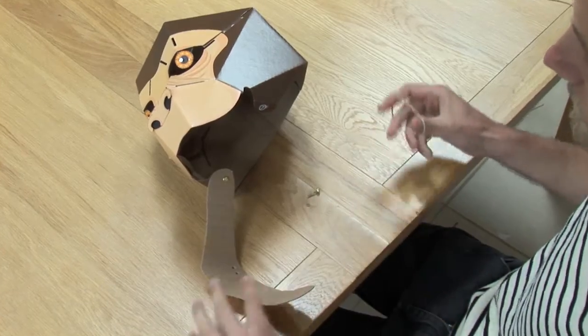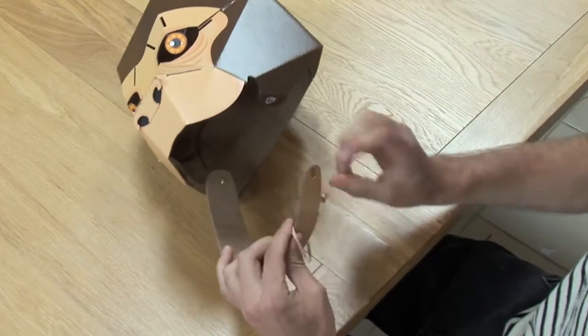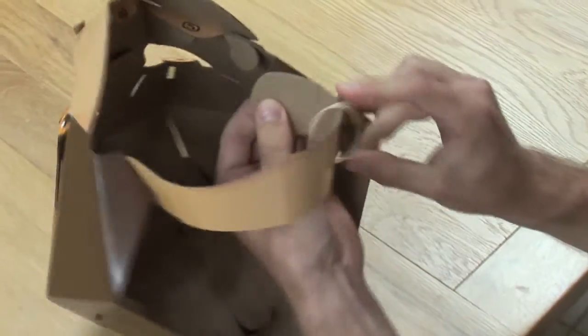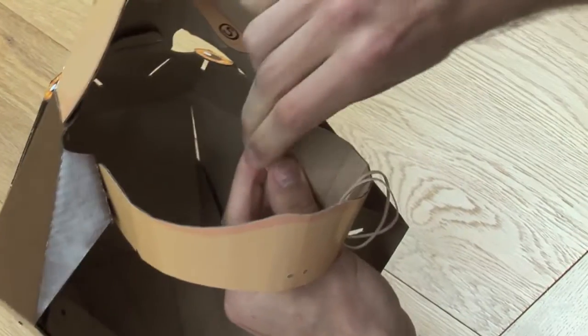Thread both elastic bands over the jaw, then bend it round to position on the other side. Secure it with the other split pin.